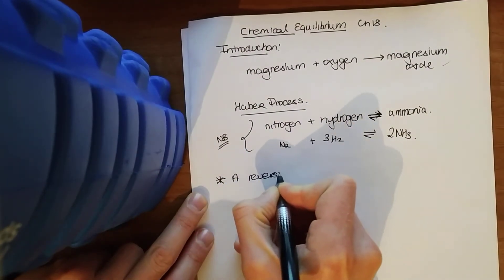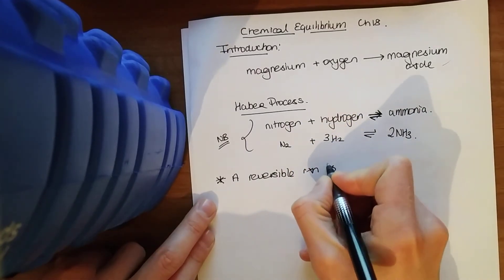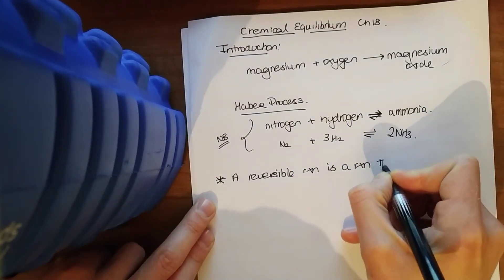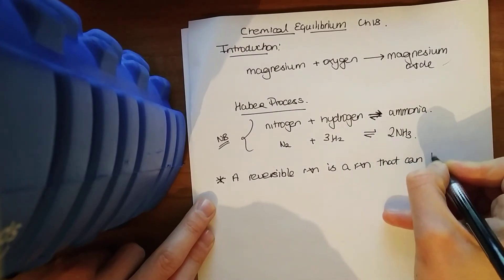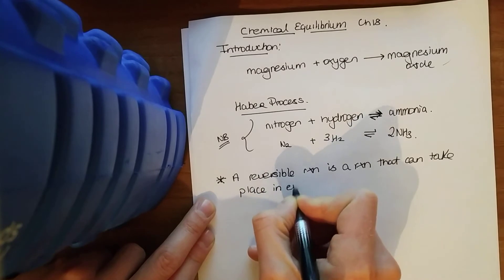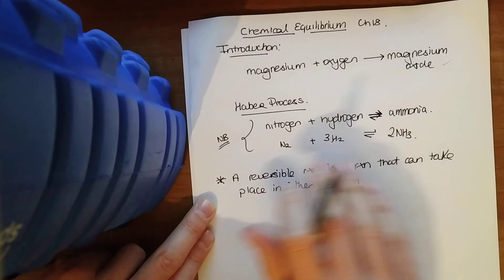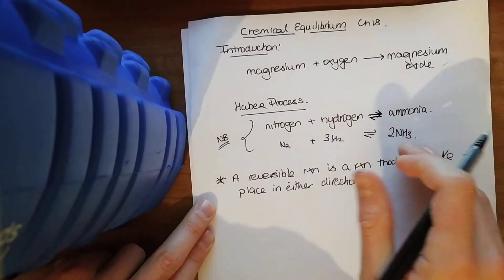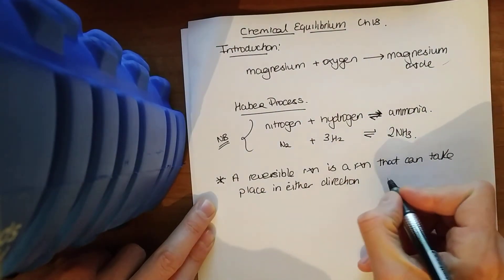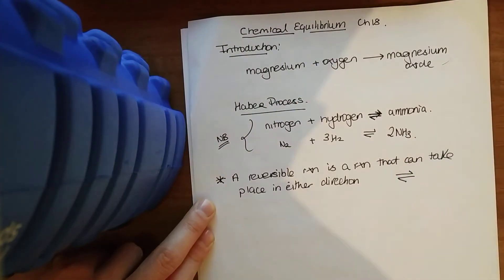So that will give us our first definition to learn - reversible reaction. And these will all be in our notes. A reversible reaction is a reaction that can take place in either direction. In either direction, meaning going to the right, reactants forming products, or our products form reactants. That's indicated by the arrow like this - kind of a half arrow on each.